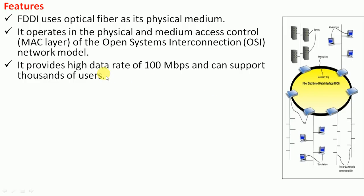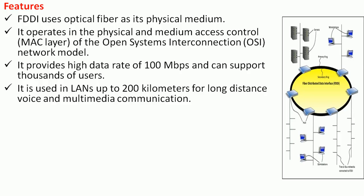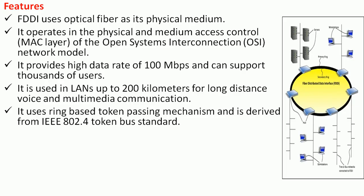FDDI can support thousands of users — a large number of people can access the network at the same time, communicate with each other, and transfer data. It is used in LANs up to 200 kilometers for long-distance voice and multimedia communication, meaning you can transfer images, videos, and document files over this network.